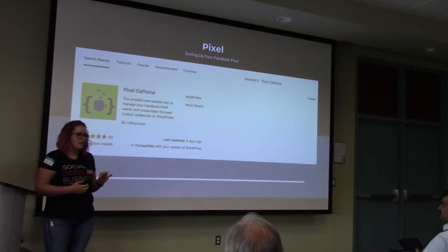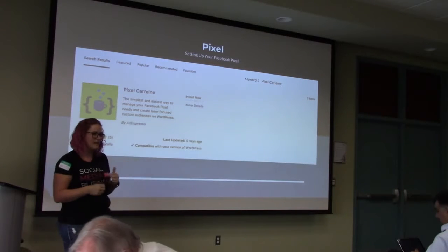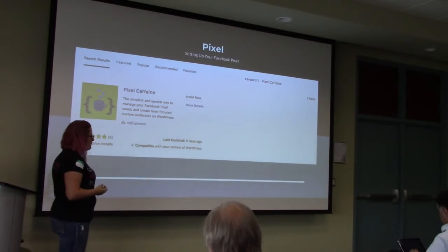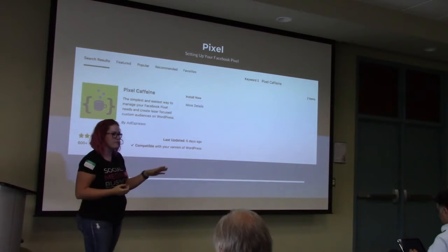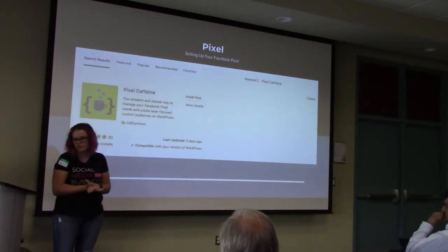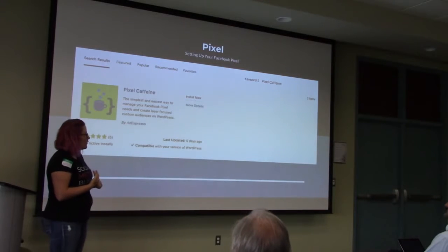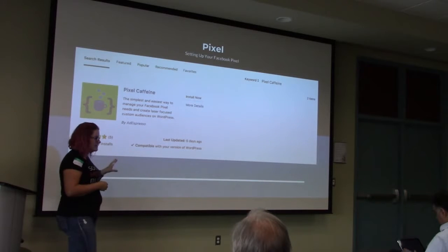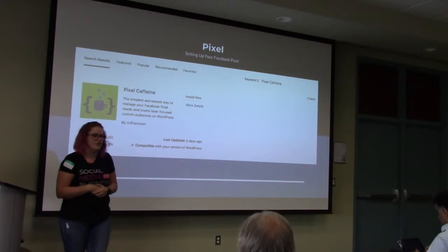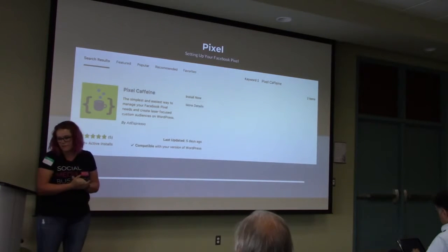A Facebook pixel is a little tracking code that gets installed on your site. You might notice this when you visit other sites — you then start seeing ads pop up elsewhere. That's called remarketing or retargeting. When you put this code on your site, it tracks visitors as they go to Facebook and other ad platforms so you can retarget your products and services. It's great for branding and brand recognition, and it's always better to have that data ahead of time rather than having an 'oh no' moment when you realize you want to retarget those people.